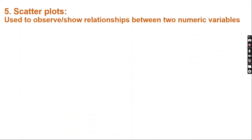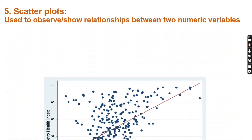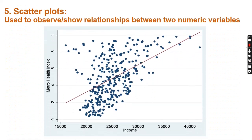Number 5: Scatter plots. As we can see in this example, scatter plots can be used to show the relationship between two numeric variables. Here in this example, the graph shows the relationship between income and the health index.